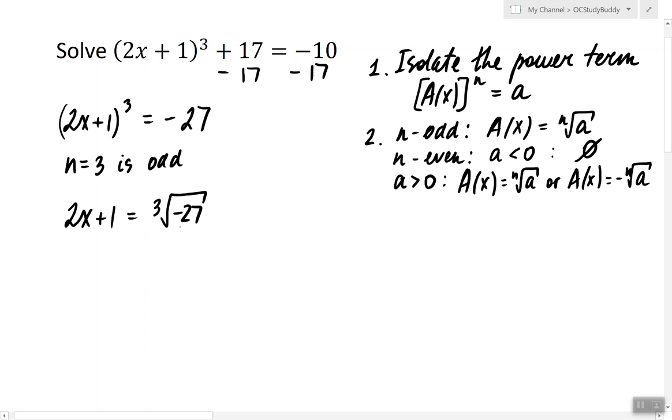Cube root of negative 27 is negative 3. So as a result we have a simple linear equation in which we can isolate x and find that the answer is negative 2.